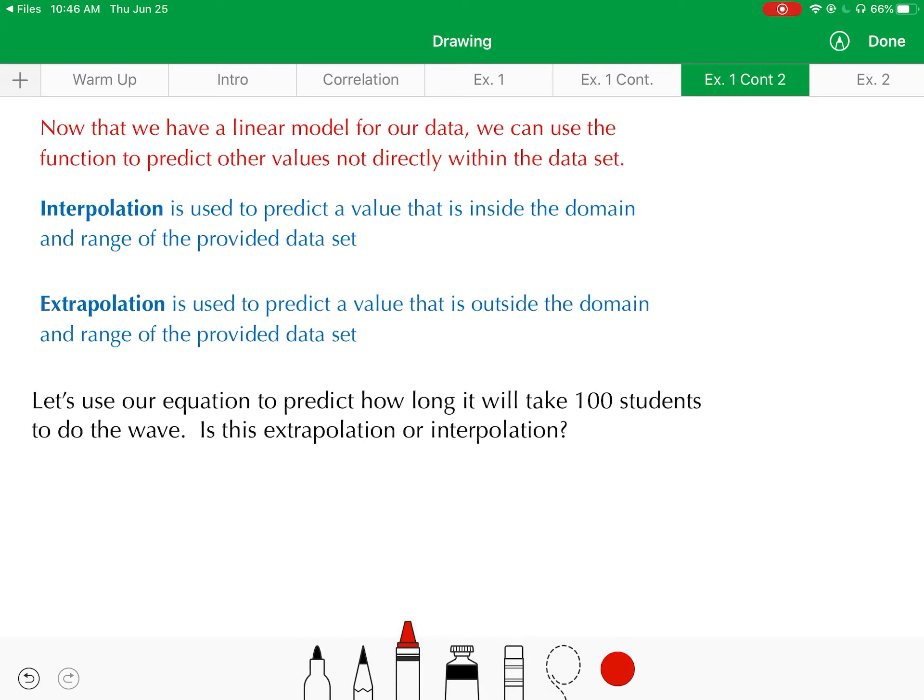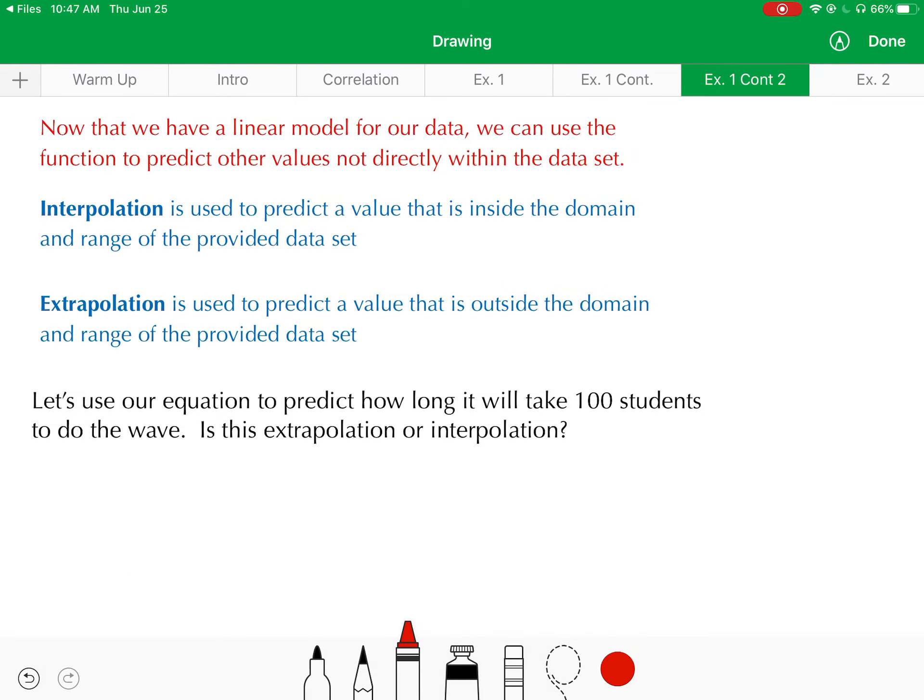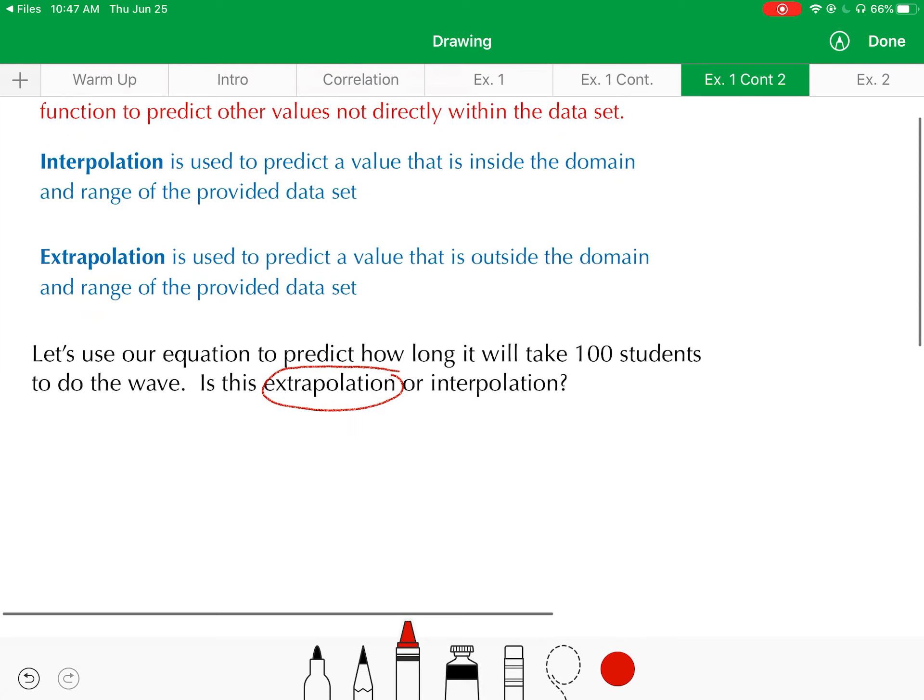Let's say we want to use the equation we just came up with to predict how long it will take 100 students to do the wave. Is this an example of extrapolation or interpolation? Well if you go back and look at our data set here, the number of students that were in our data set range from 4 students up to 20 students. We are now trying to predict 100 students, which falls outside of the original domain in this data set, so this would be an example of extrapolation. If I was trying to make a prediction for any number of students between 4 and 20, then that would be considered interpolation.